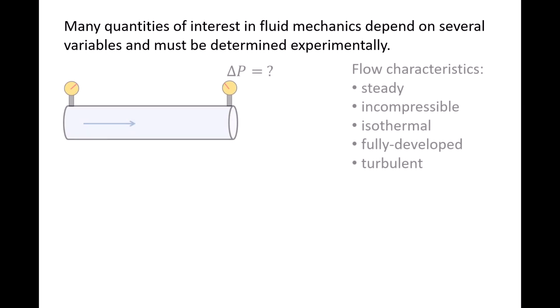For example, let's say that we want to be able to predict the pressure drop, delta p, along a length of horizontal pipe when the flow is steady, incompressible, isothermal, fully developed, and turbulent.